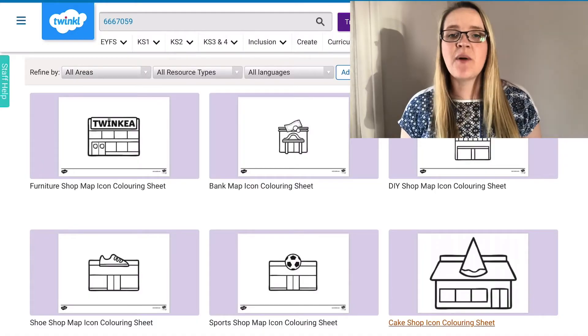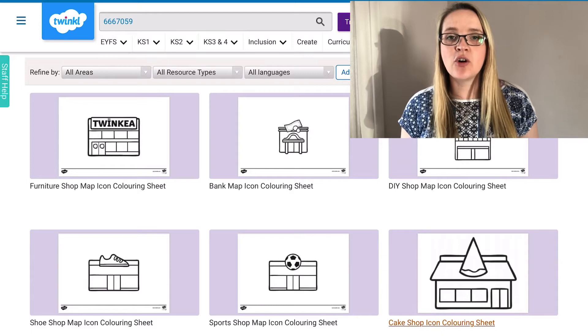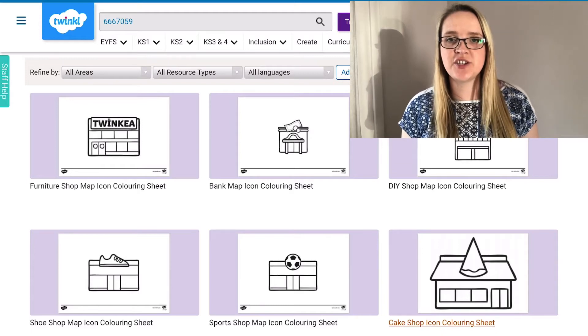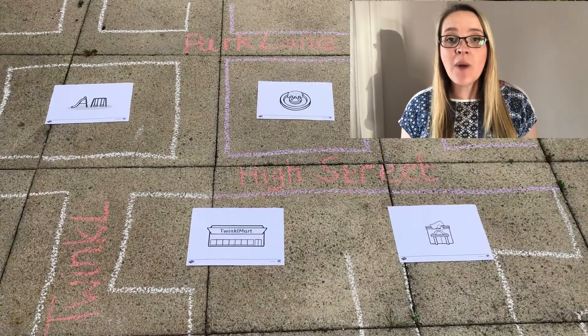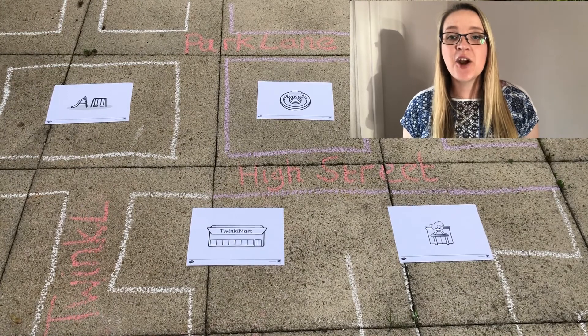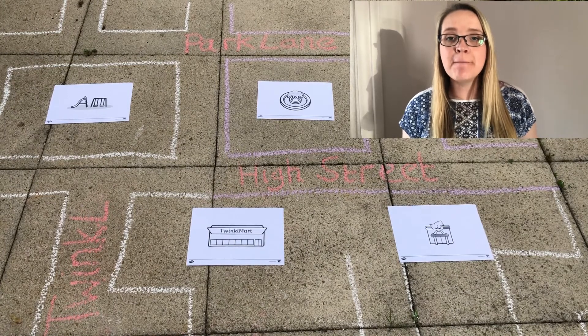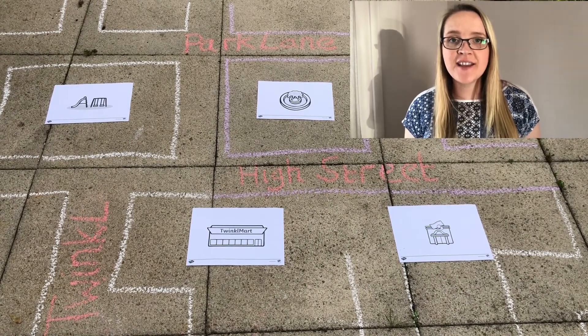We also have these individual icon colouring pictures. Why not get your children to colour them in and then go outside and create a big map using the different icons.